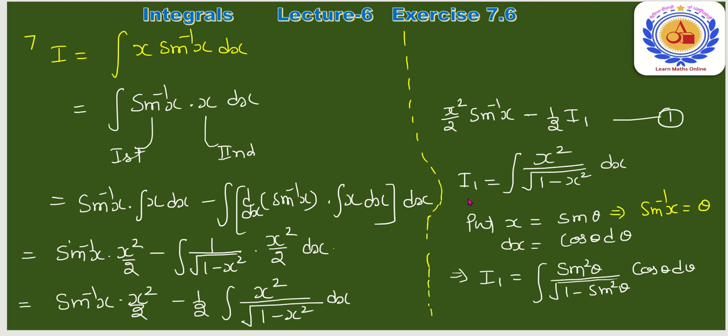I₁ = ∫x²/√(1−x²) dx को solve करने के लिए substitution: x = sin θ। जब भी √(1−x²) हो, x = sin θ substitute करते हैं। जब 1+x² हो, x = tan θ। जब x²−1 हो, x = sec θ।